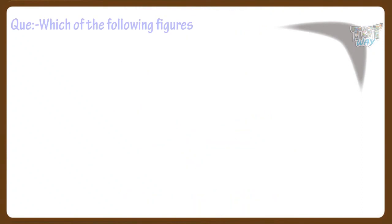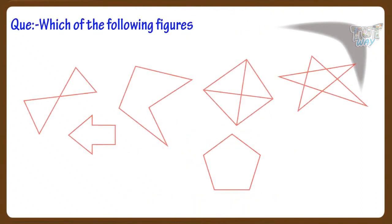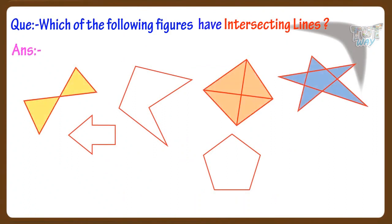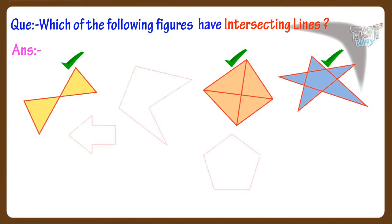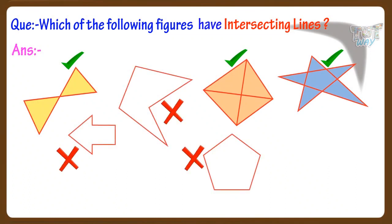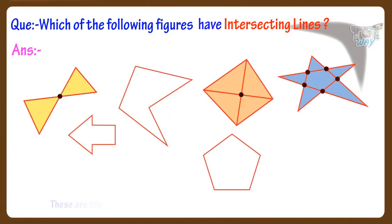Now which of the following figures have intersecting lines? Only these three figures have intersecting lines. The other three figures do not have any intersecting lines. And these are the points of intersection in the figures with intersecting lines.